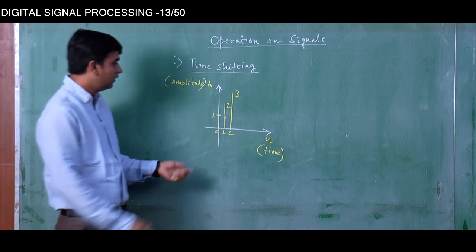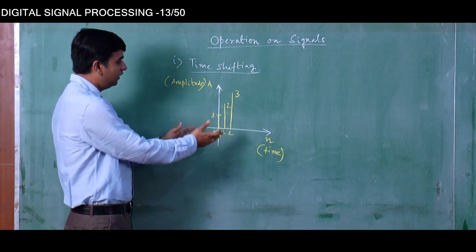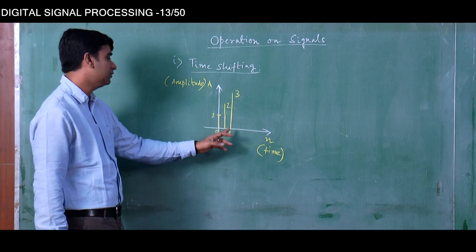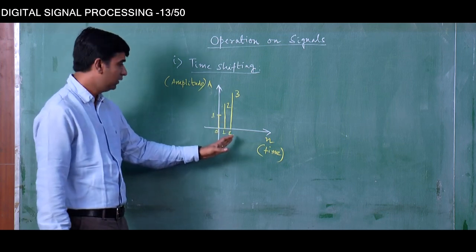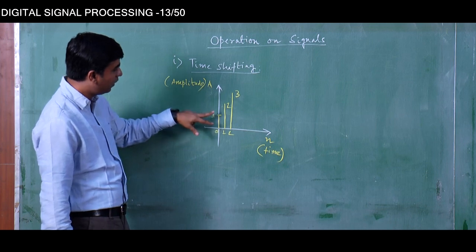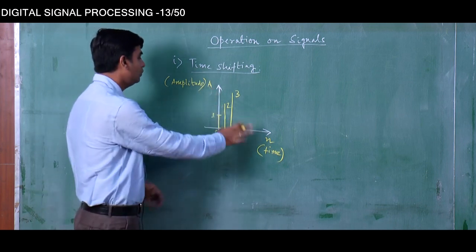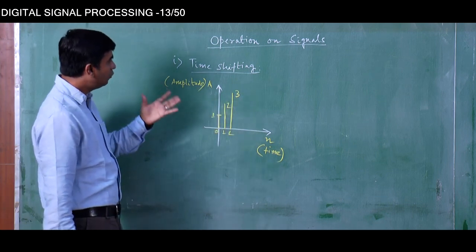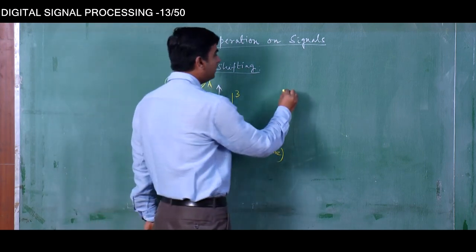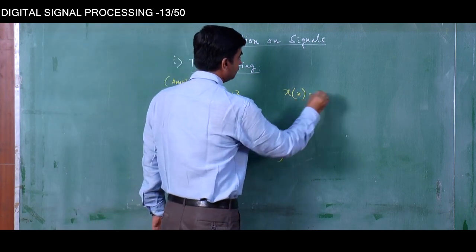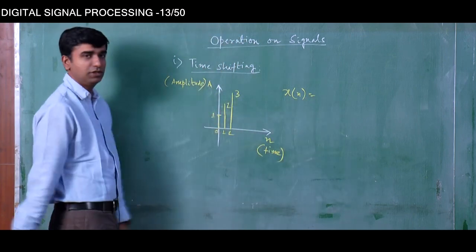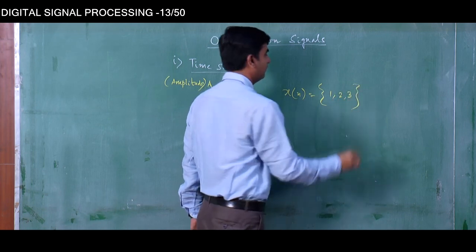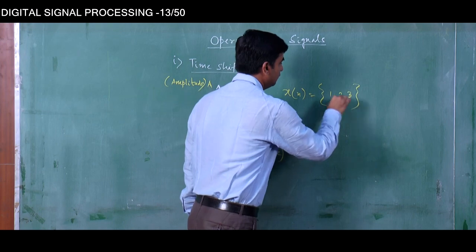Here we have taken a digital signal — a discrete time, discrete value signal. This signal exists only at three instants: 0, 1, and 2. The value at instant 0 is 1, at instant 1 the value is 2, and at instant 2 the value is 3. We can write this signal x[n] as the sequence 1, 2, 3, with this as the origin.